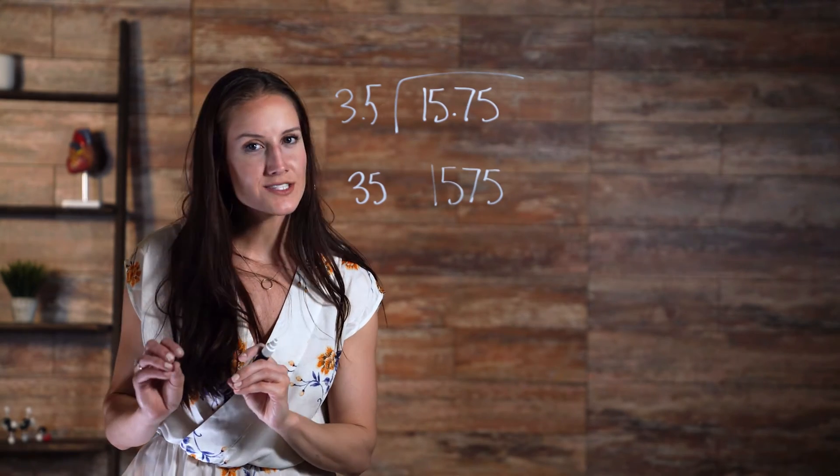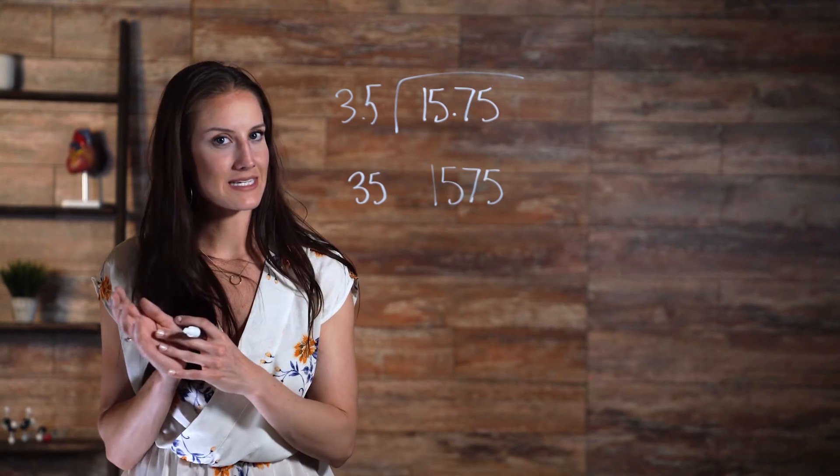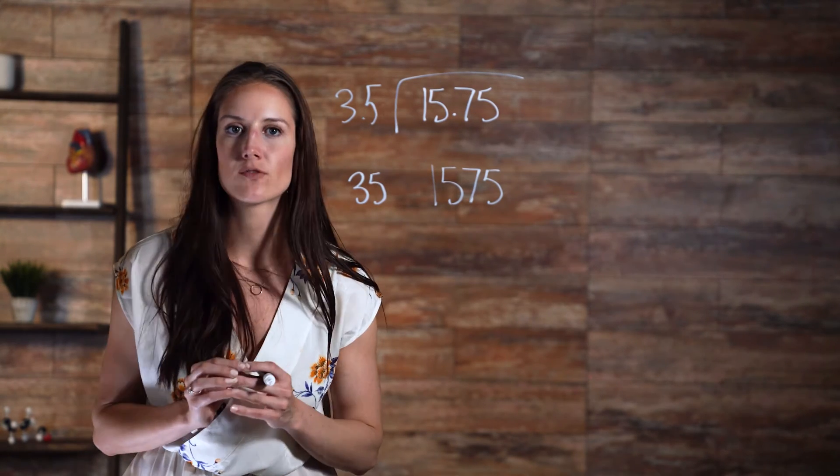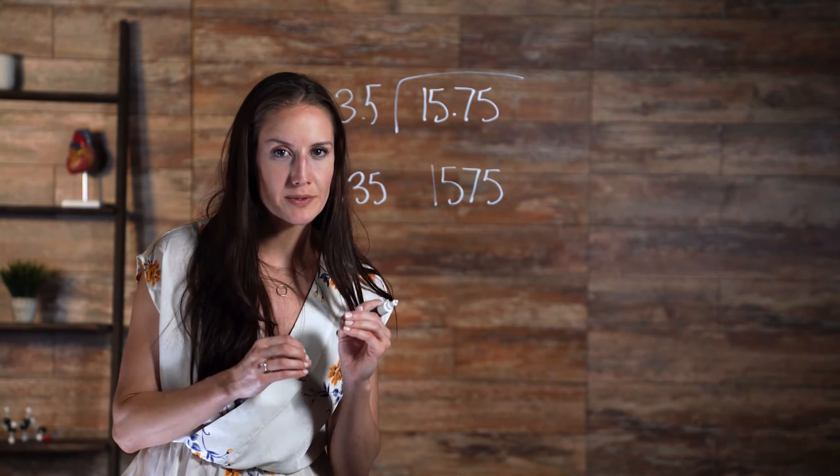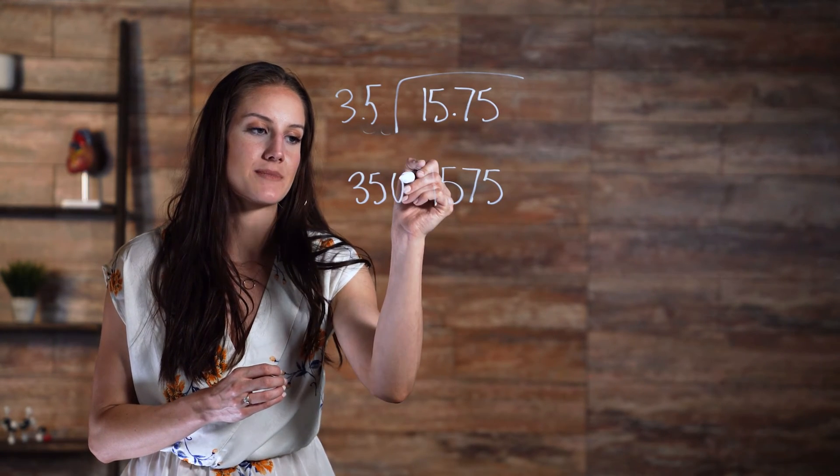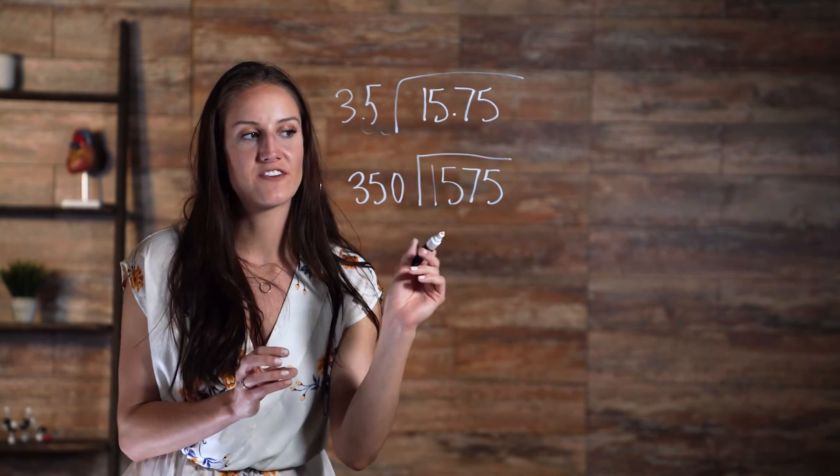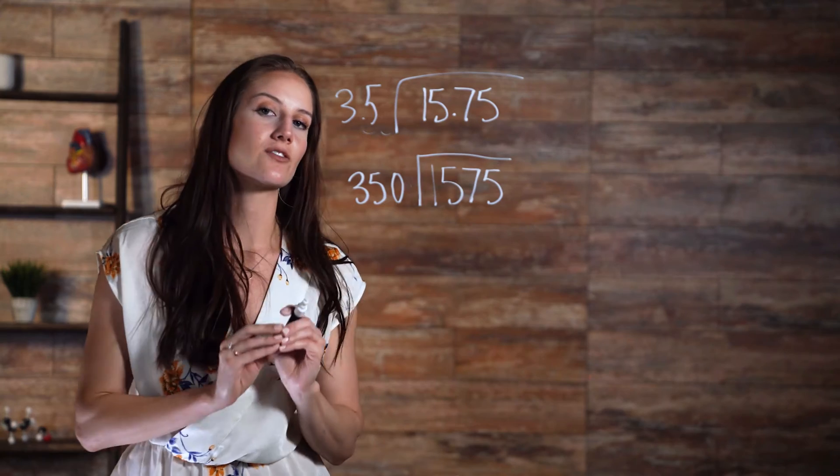As we mentioned, we need to do the same thing to both numbers, so now we multiply 3.5 by 10 twice, or by 100. We move the decimal over two places to the right, and add a 0 to the empty space. So now we have 1575 being divided by 350.